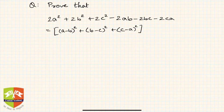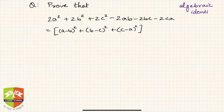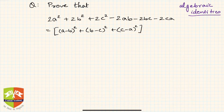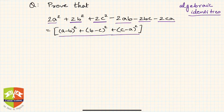Hello friends, welcome again to a problem solving session on algebraic identities. In previous sessions we have been dealing with algebraic identities, which are a very important and vital area in mathematics. The given question is: prove that 2a² + 2b² + 2c² - 2ab - 2bc - 2ca equals the right-hand side expression.